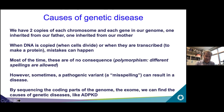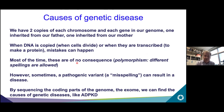We have two copies of each chromosome and each gene — one from the father and one from the mother. DNA is copied when cells divide, or transcribed to make protein via messenger RNA, and this is usually when mistakes happen that can lead to disease. Most mistakes are corrected or are non-consequential — called polymorphisms. However, sometimes a pathogenic variant, a misspelling, occurs that can cause disease like ADPKD. By sequencing the coding parts of the genome, we can try to determine the cause of ADPKD in any particular patient.